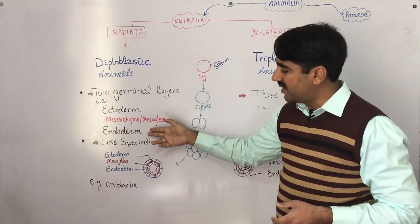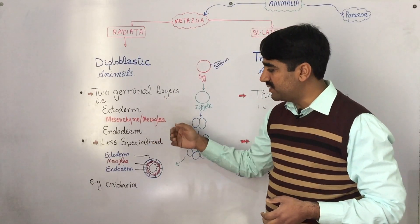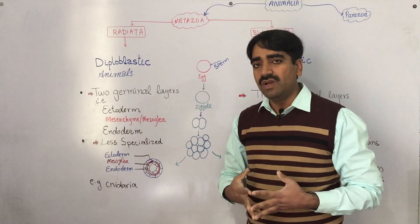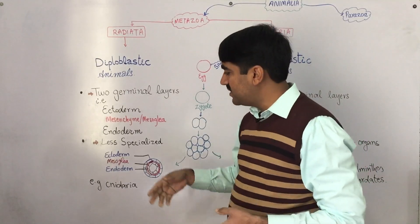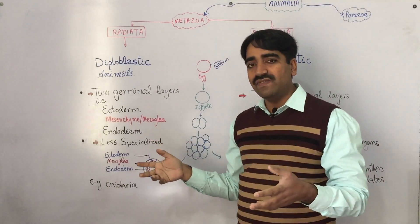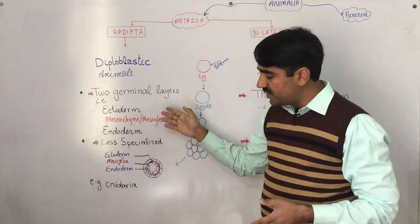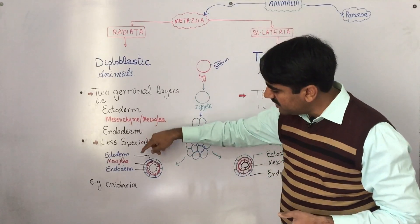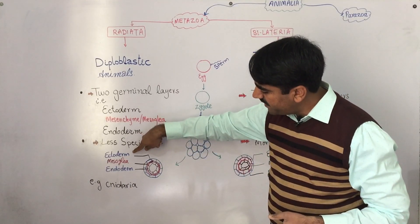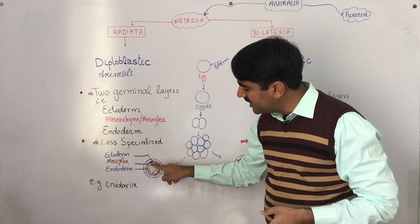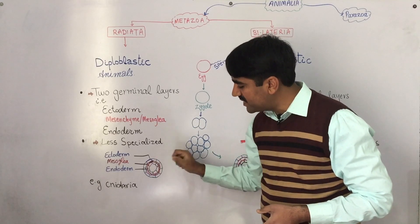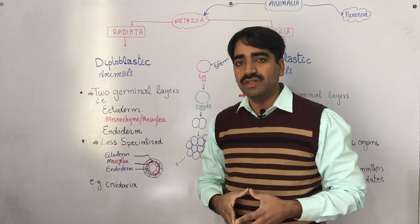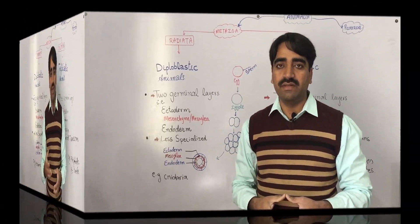Although ectoderm and endoderm layers are formed, they are not very specialized — they are not differentiated into organs or systems, just less differentiated layers. In the gastrula of diploblastic animals, there is an outer ectoderm, an inner endoderm, and the jelly-like mesoglia between them. The only phylum belonging to this group is the Cnidaria.